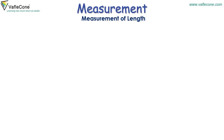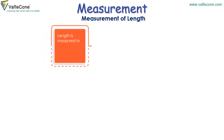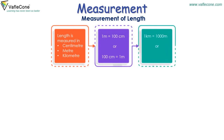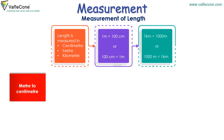Measurement of length. Length is measured in centimeter, meter, and kilometer. 1 meter is equal to 100 centimeters, or 100 centimeters is equal to 1 meter. 1 kilometer is equal to 1000 meters, or 1000 meters is equal to 1 kilometer.